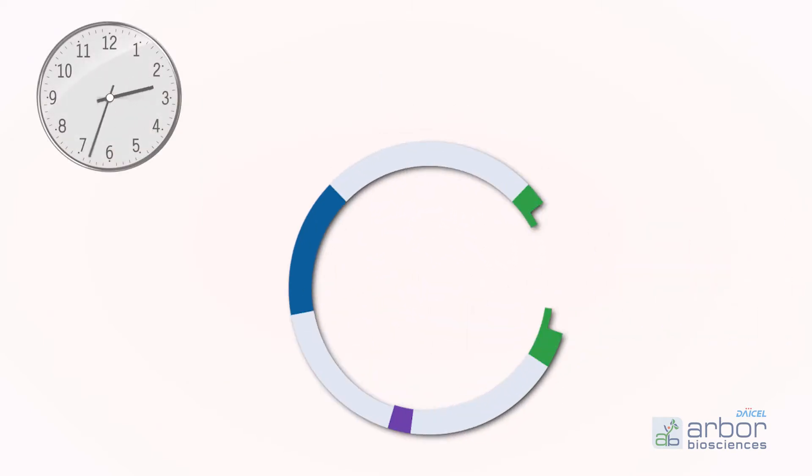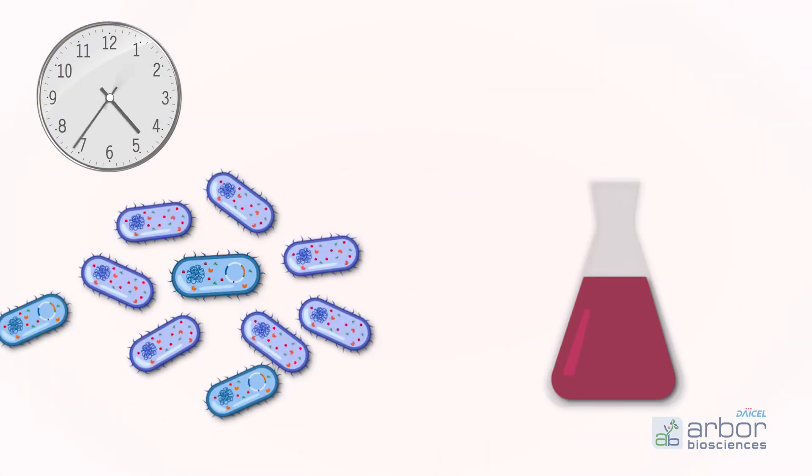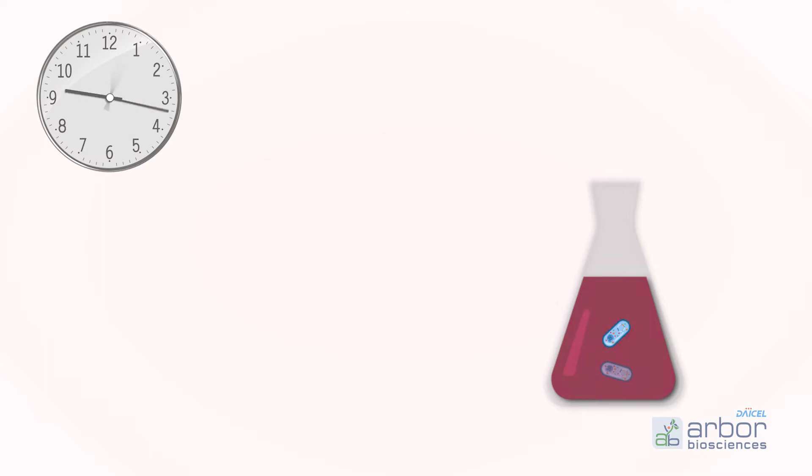Traditional protein expression in cellular systems requires generating a construct, transformation, clonal selection, and finally culturing of the cells to express the desired protein. This eats up valuable time in a discovery process and makes achieving higher throughputs complicated.